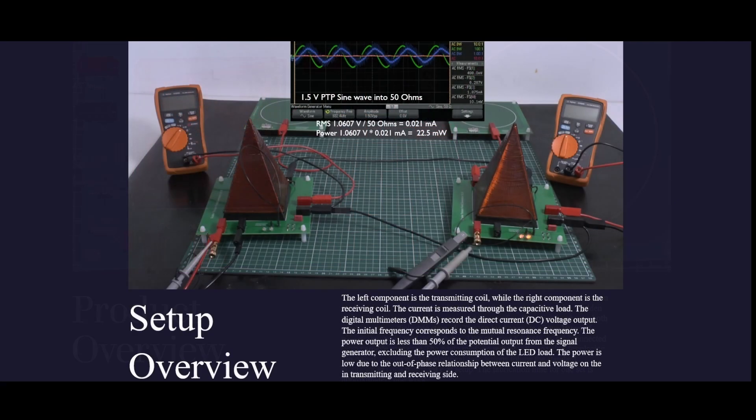The left component is the transmitting coil, while the right component is the receiving coil. The current is measured through the capacitive load. The digital multimeters, DMMs, record the direct current, DC, voltage output.